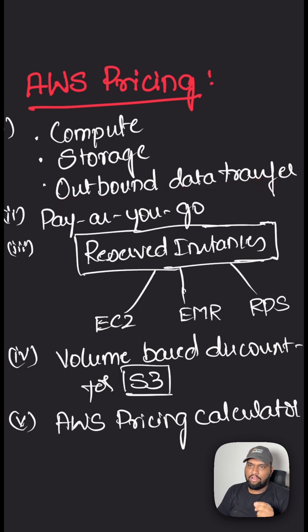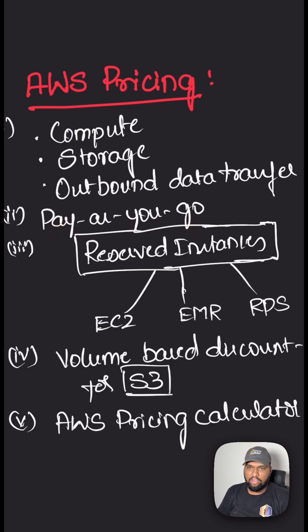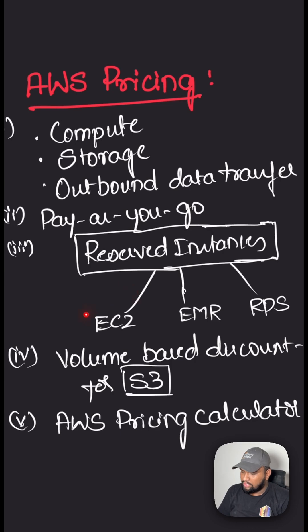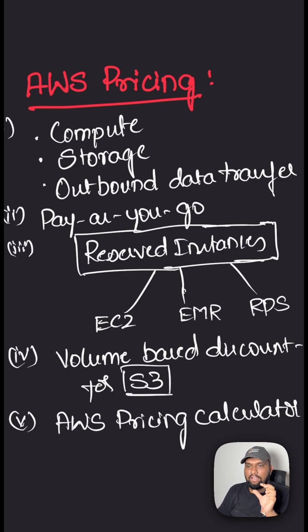These are the three different fundamental drivers of cost in AWS. Apart from this, AWS also offers pay-as-you-go, meaning you only pay for whatever you are using. You can also reserve instances for EC2, EMR, and RDS, and you have the ability to get volume-based discounts for services like S3 as well.